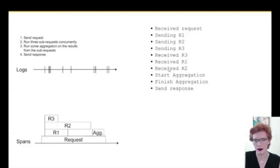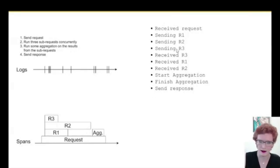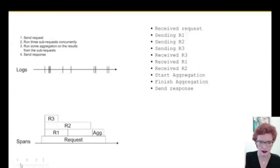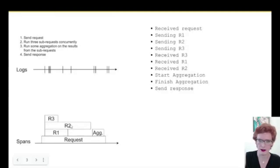Logs are not inherently hierarchical — they're inherently individual. You might imbue logs with hierarchy by attaching a request ID, but you still don't have the same level of correlation as span data. Even if you attached a request ID to all log events, you'd know they were part of the same trace, but you wouldn't necessarily know hierarchically that R1, R2, and R3 were children of the larger request state.